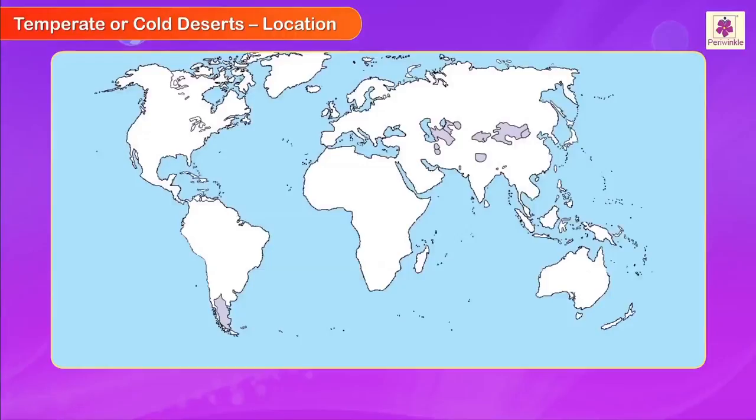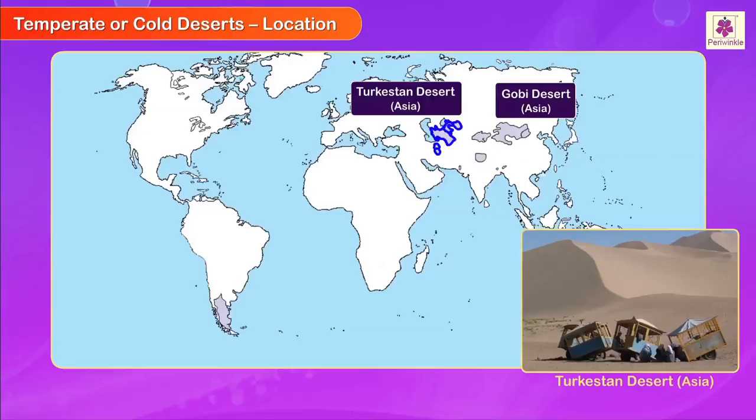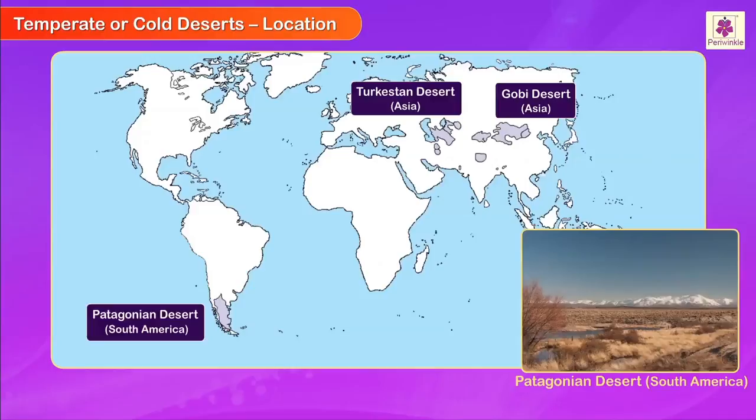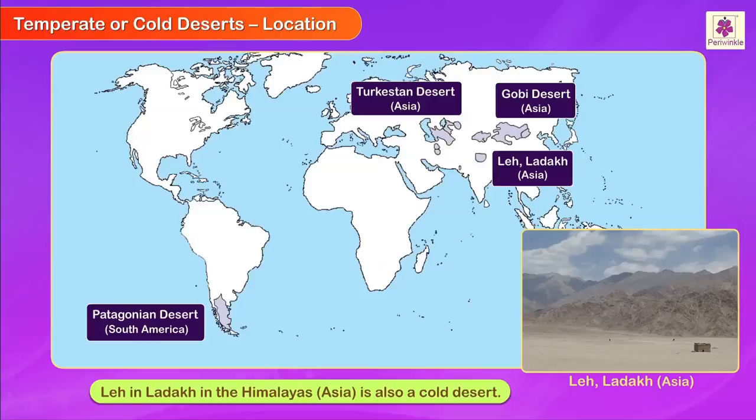Examples of temperate or cold deserts are the Gobi Desert in Asia, the Turkestan Desert in Asia, and the Patagonian Desert in South America. Leh in Ladakh in the Himalayas in Asia is also a cold desert.